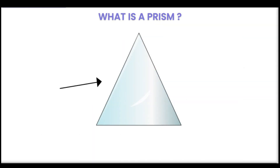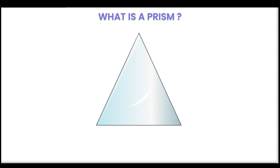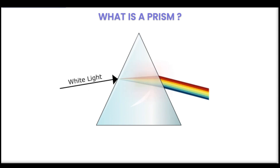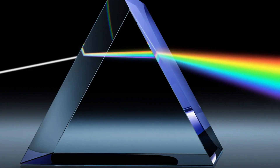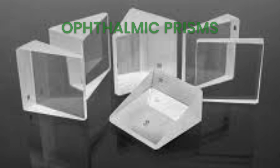Introduction: When viewed through a prism, the position of an object would appear to be changed. When white light is incident on a prism, it appears to be dispersed into a color spectrum when emergent from the second surface. Dispersion is usually seen in thick prisms whose apical angle is greater than 15 to 20 degrees. Ophthalmic prisms are generally thin prisms whose apical angle is less than 10 to 15 degrees.